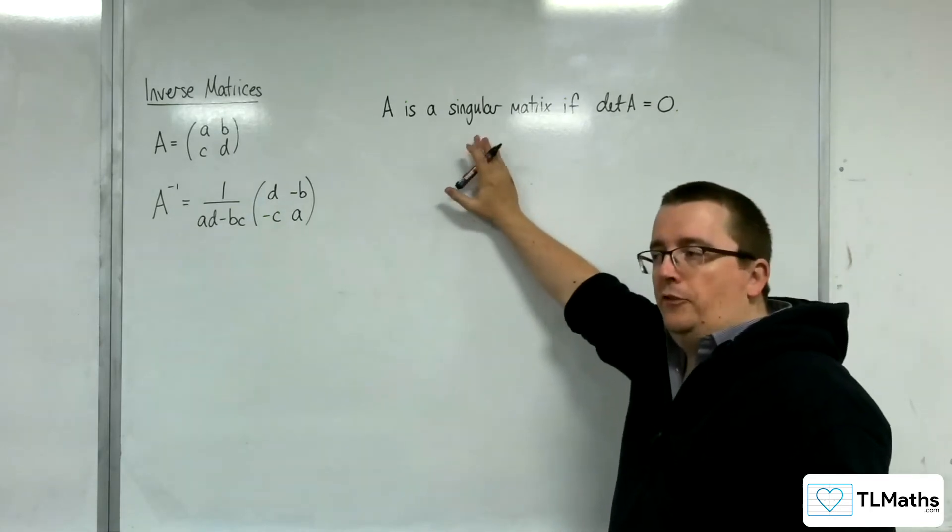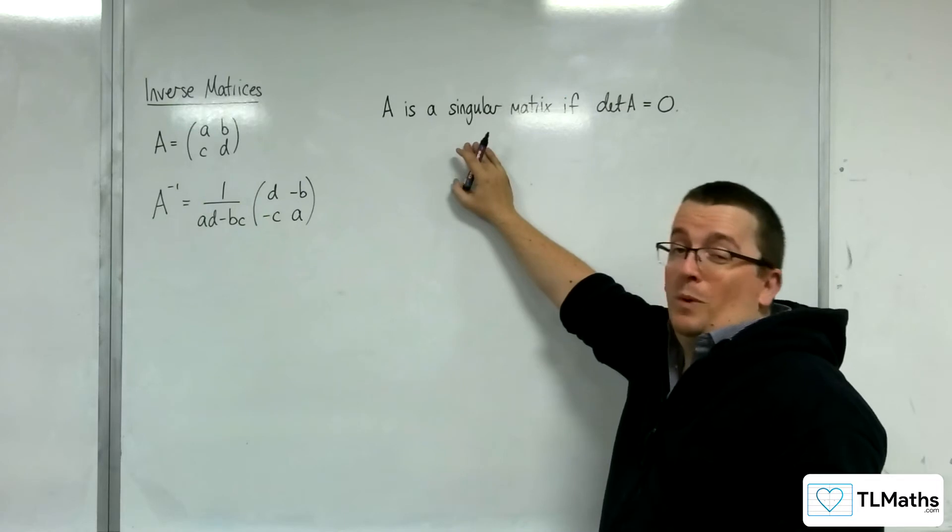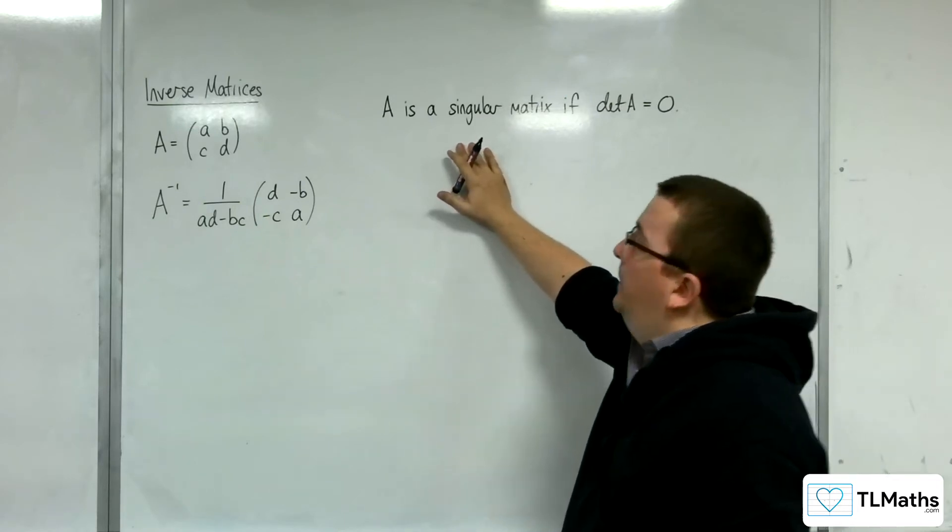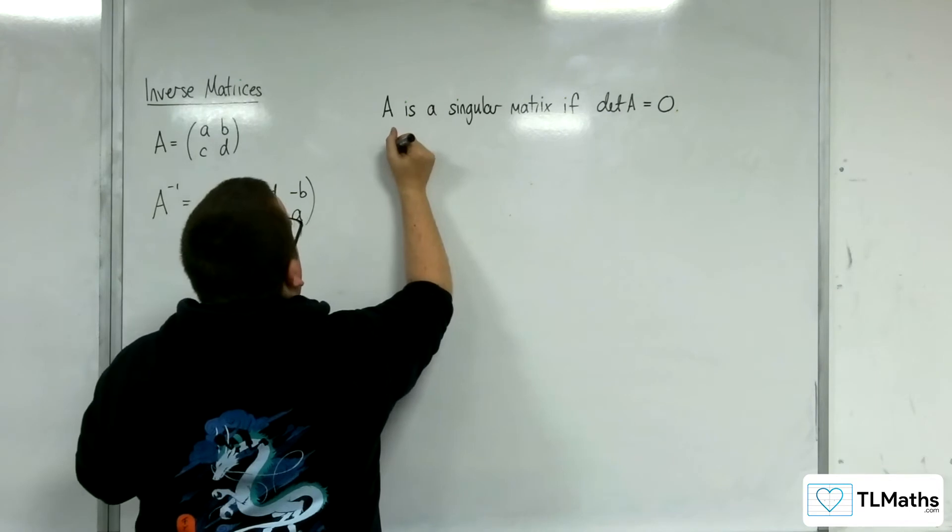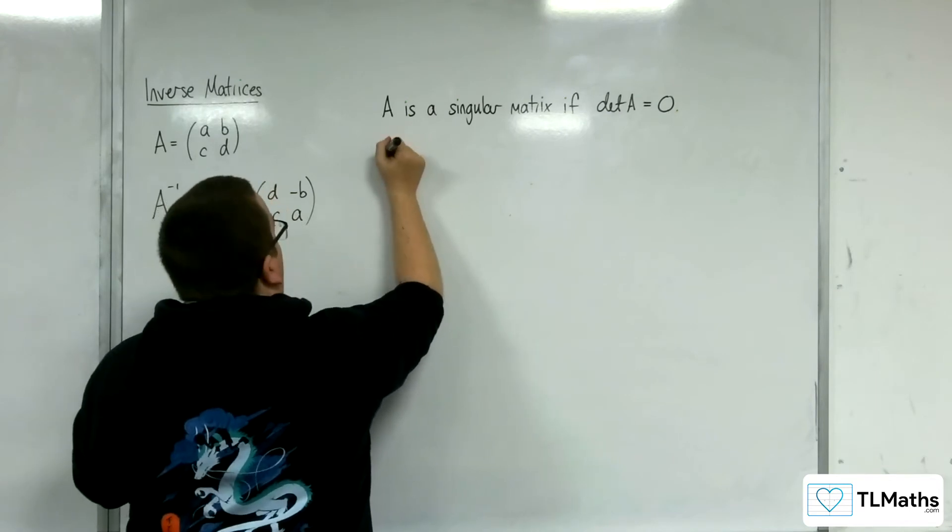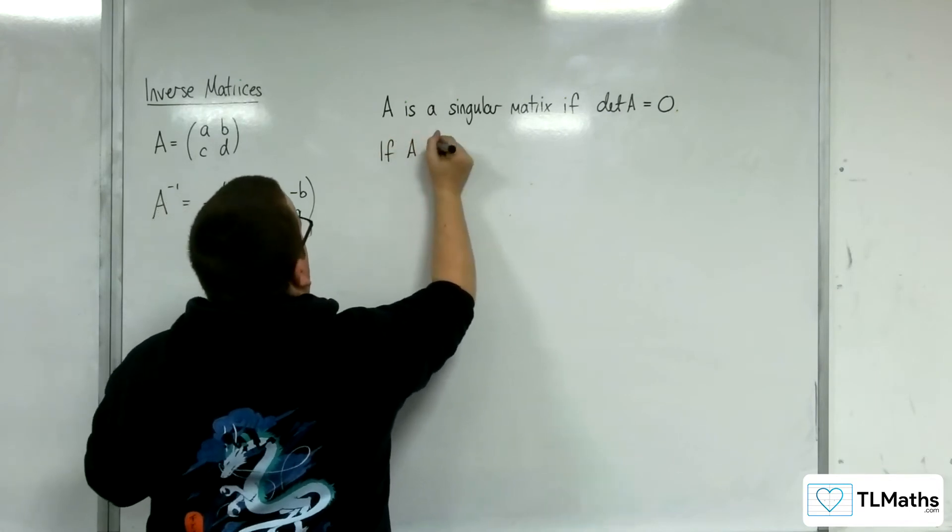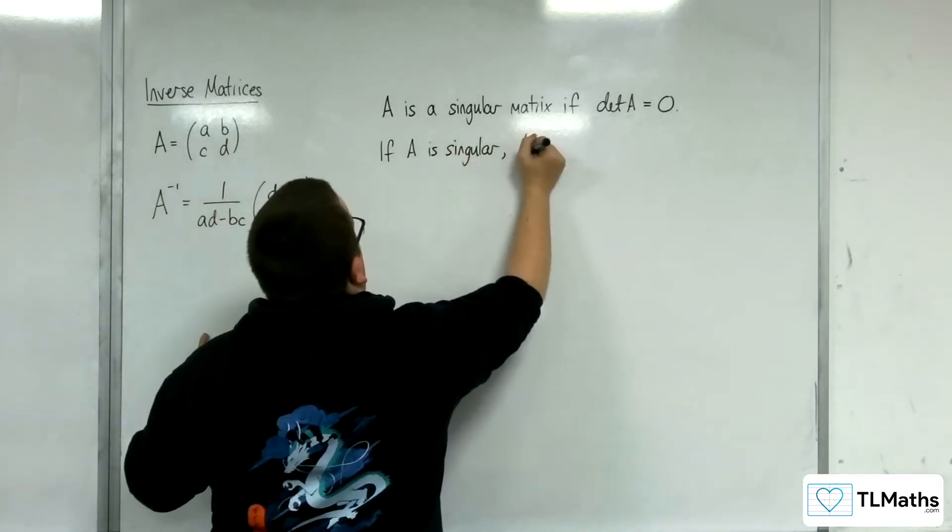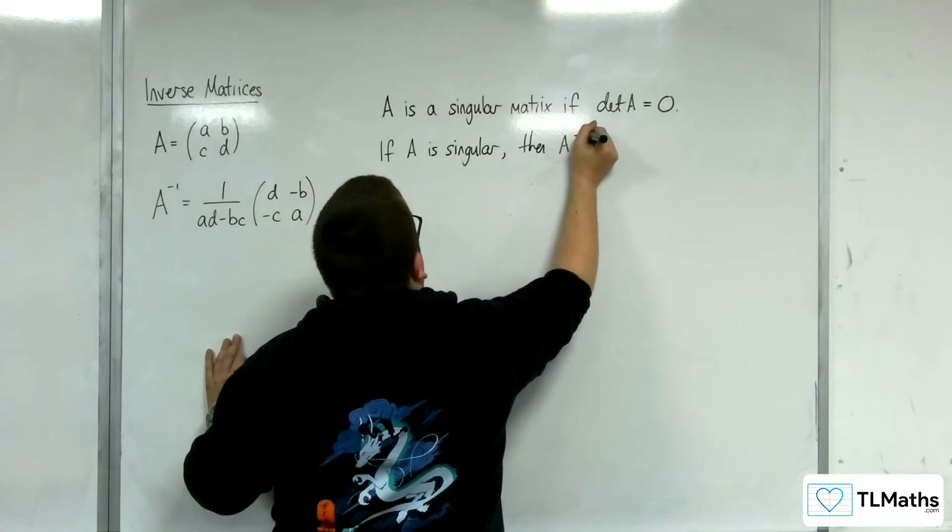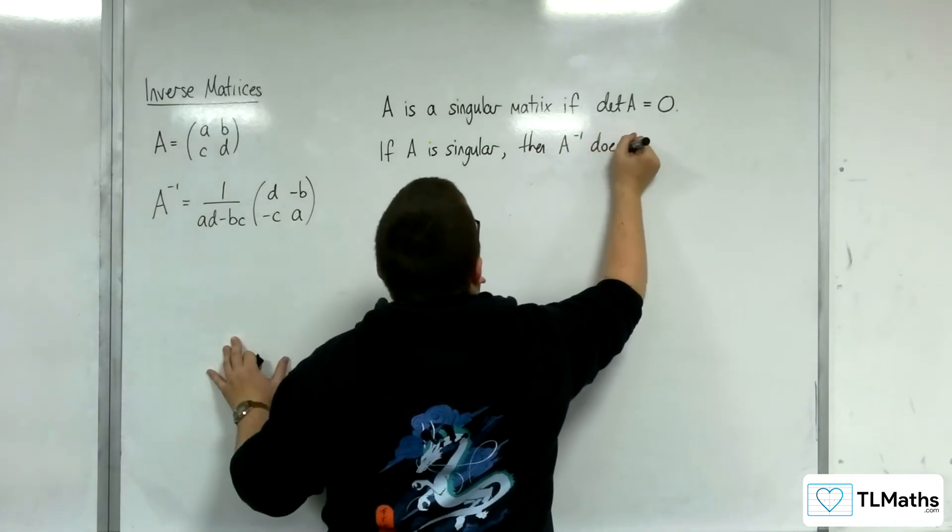So, we talk about singular and non-singular matrices, depending on whether they've got the determinant 0 or not. The consequence of this is that if A is singular, then the inverse matrix does not exist.